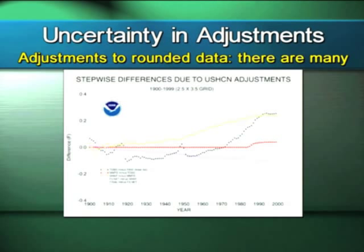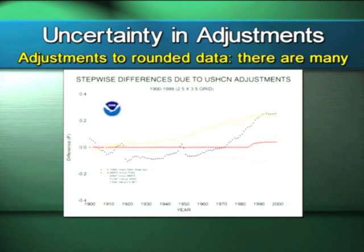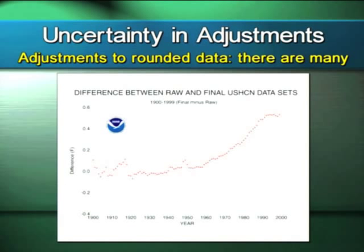Then there are adjustments to the surface temperature record for all the different problems associated with measurement — the time of observation bias, fill net, SHAP — all these different adjustments to account for the fact that the surface temperature network is imperfect for measuring climate. This is well documented and well understood. NOAA applies a number of adjustments, and here is the sum total of adjustments up to the year 2000 from NOAA's USHCN website. There's a significant amount of adjustment added to the surface temperature record.